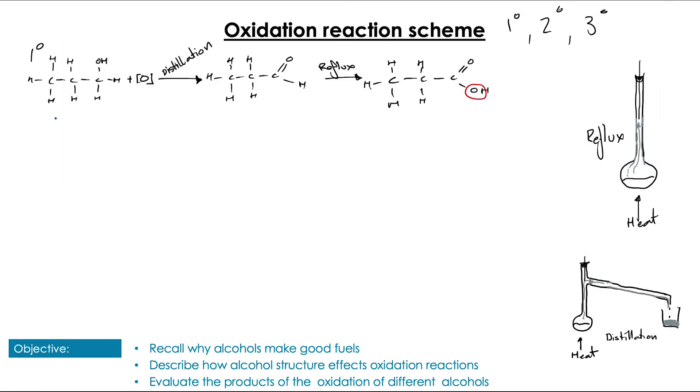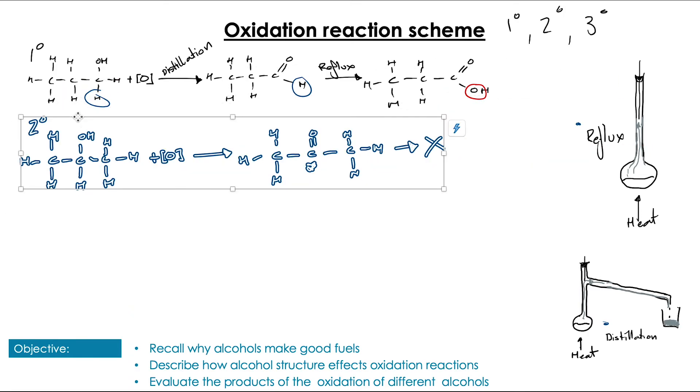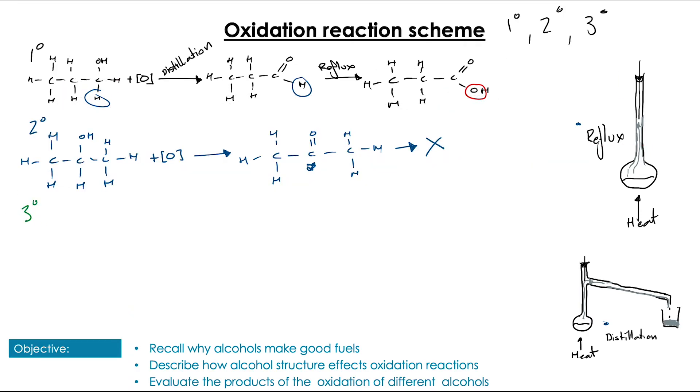Let's make some space and have a look at a secondary alcohol. In this situation, we form the corresponding ketone and we can see again we're removing a hydrogen from the carbon the alcohol group is attached to and from the oxygen in the alcohol group. However, unlike the aldehyde formed with the primary, we no longer have that free hydrogen to be further oxidized. So we cannot have a second step. No matter how long we reflux it, we're only ever going to get this ketone.